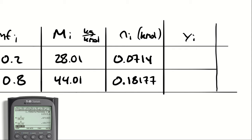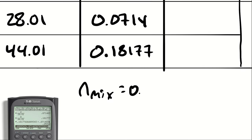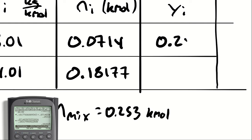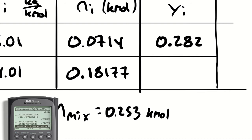Summing those together gives the total moles of the mixture: 0.0714 + 0.18177 = 0.253 kmol. Then taking the number of moles of each species divided by the total moles gives the molar fraction. For CO₂: 0.071403 / 0.25318 = 28.2%, so the molar fraction of CO₂ is 0.282. The remainder must be nitrogen: 71.8%, so the molar fraction of N₂ is 0.718.